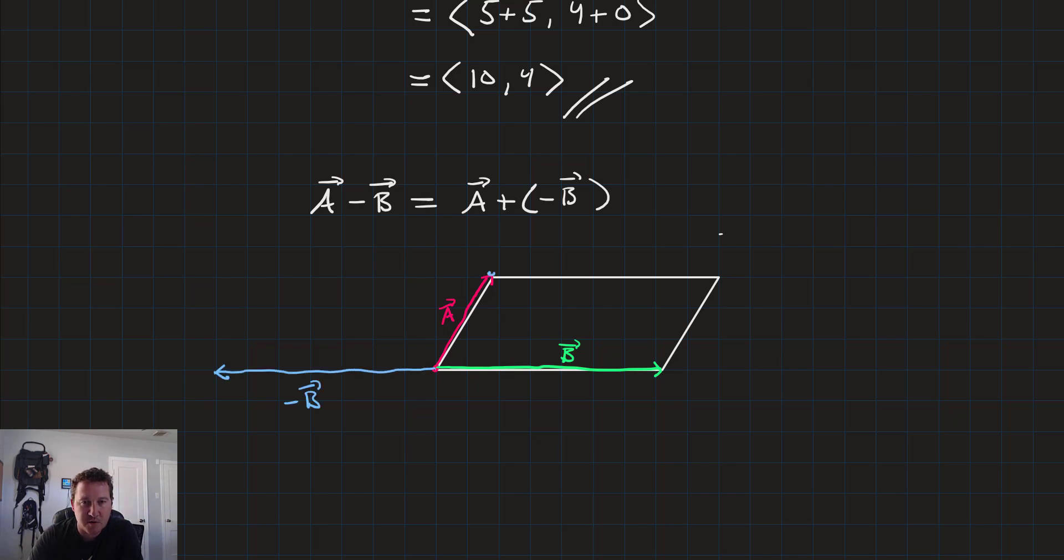Now minus b would be a vector that looks like this, a vector in that direction. We could also draw one coming from the origin like that. That's also minus b. So the result there is going to connect to that mirrored corner of the parallelogram. So that would be vector a minus vector b.